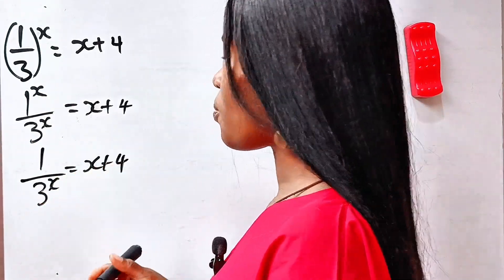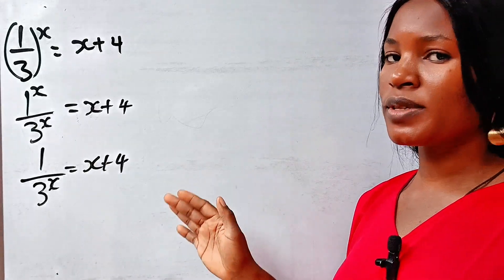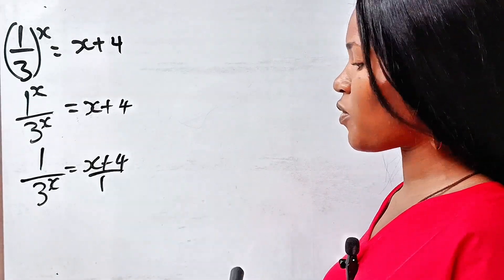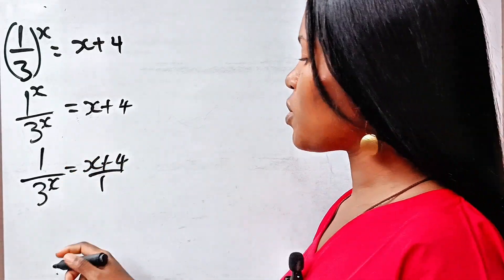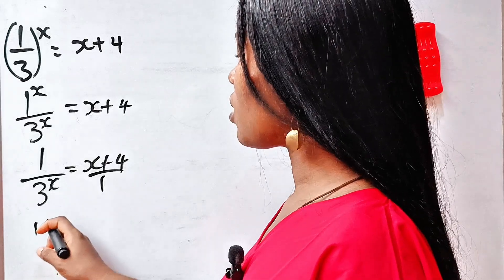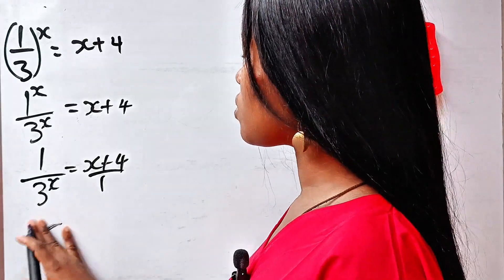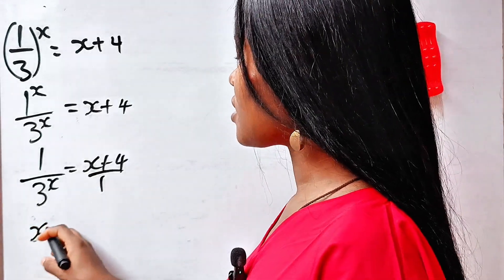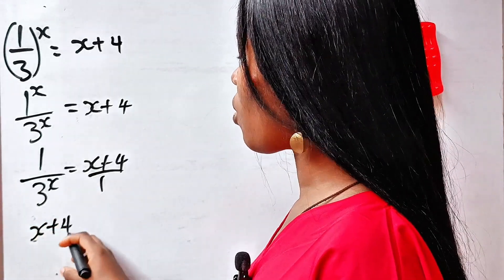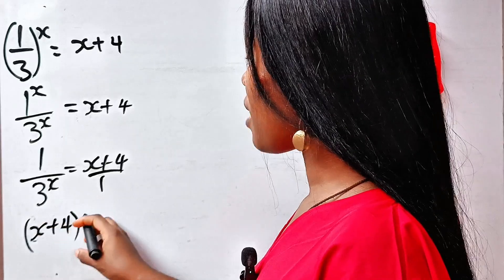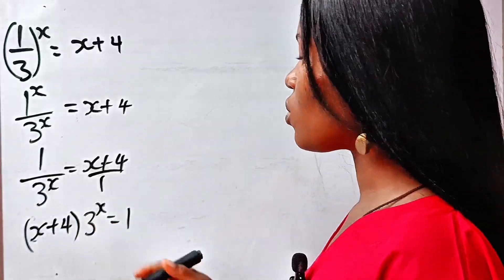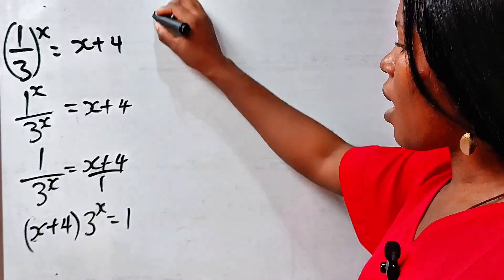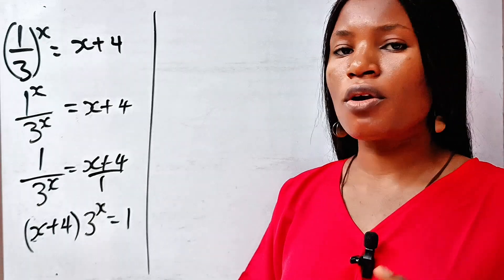Now let us cross-multiply, because this is the same as (x + 4) divided by 1. So if we cross-multiply, we have x plus 4, multiplied by 3 to the power of x, is equal to 1.